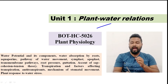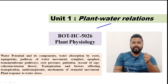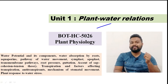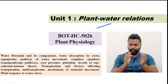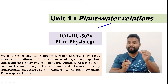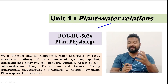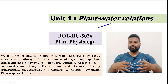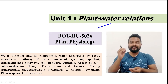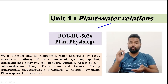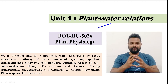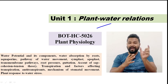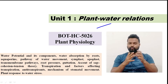We have a cell. About 70% of the cell is made up of water. About 70% of the body weight is water. That is the importance of water. This is because plant and water relation is very important.